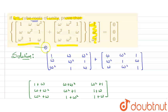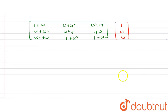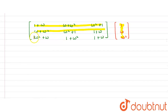Now we need to multiply this result with the given matrix. Let's write it here — that is the column matrix: one, omega, and omega squared. We need to multiply these two matrices. We know how to multiply two matrices: the row of the first matrix multiplies the column of the second matrix, then the second row, then the third row, each multiplied with the same column.